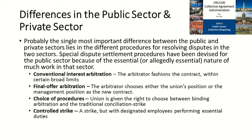There is also a choice of procedures, where unions are given the right to choose between binding arbitration or a traditional conciliation-strike type situation — usually either/or, not both. Most commonly seen are controlled strikes: the government allows a strike to proceed, but deems certain workers as essential employees who must report to work as usual, so the strike continues in a limited capacity.